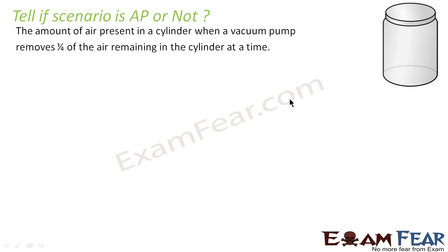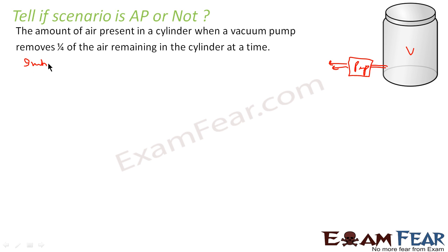The amount of air present in a cylinder when a vacuum pump removes 1/4th of the remaining air at a time. For example, this is the cylinder connected to a vacuum pump. This pump takes out the air. Let's suppose the original volume of air is V — so the initial air volume is V.